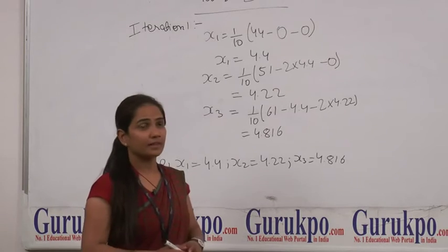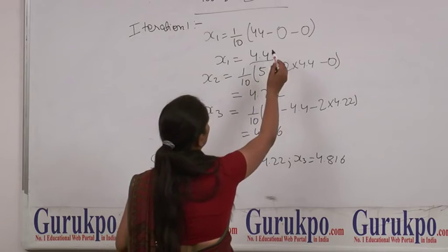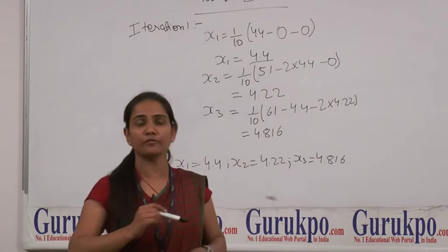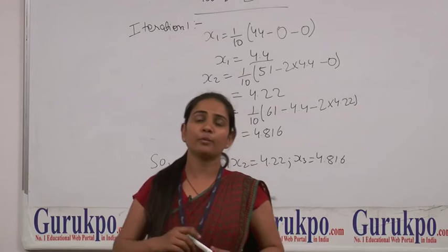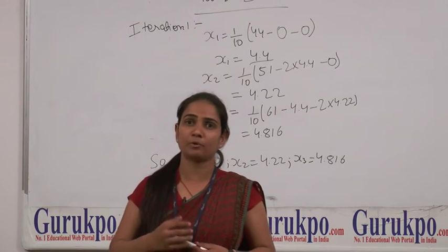Now we can see that x1 gives us 4.4 by substituting the values of x2 and x3 equals 0, which we have taken as our initial approximations.